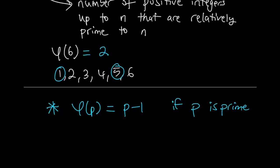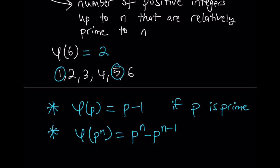Now let's talk about another important case: what if you have the power of a prime? If you write all numbers 1 through p^n and take out the ones not relatively prime to p^n — which are multiples of p, and there are p^(n-1) of them — then phi of p^n equals p^n minus p^(n-1), where p is prime.